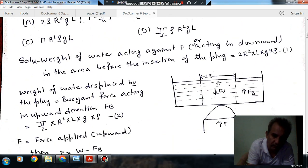So the volume of that portion is 2R × R × L = 2R²L. And if we multiply it by ρ × G, then this is the weight of the water acting in downward direction.